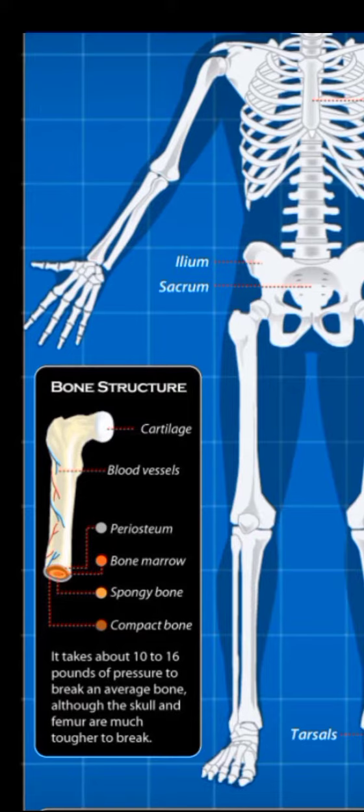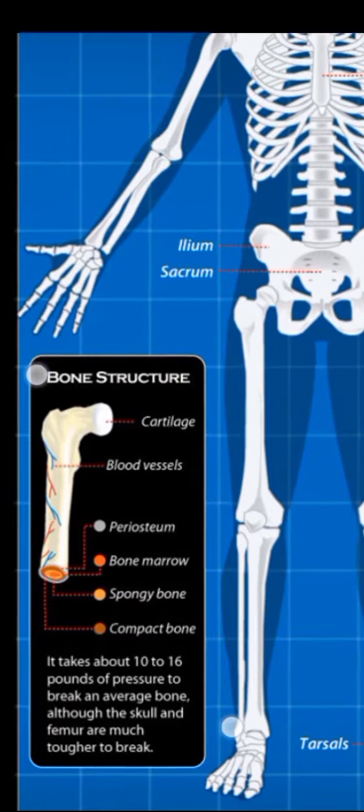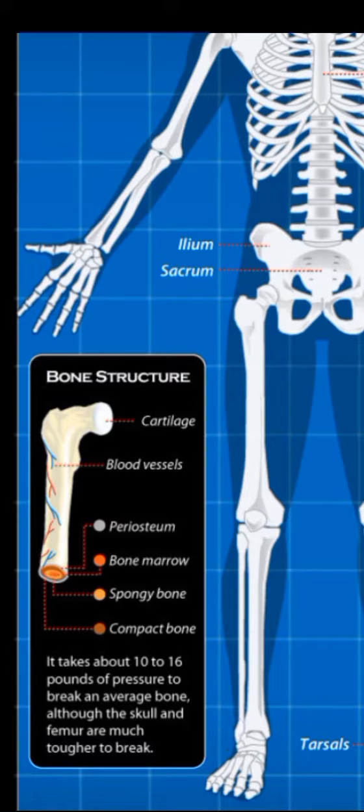It takes about 10 to 16 pounds of pressure to break an average bone, although the skull and femur are much tougher to break.